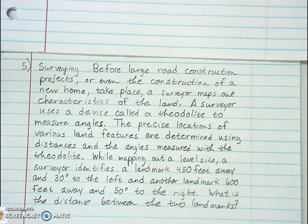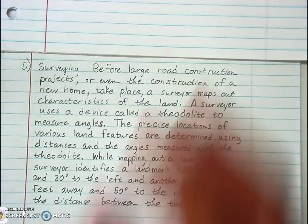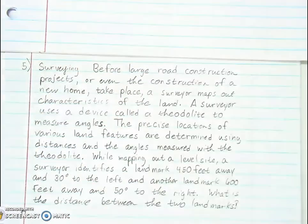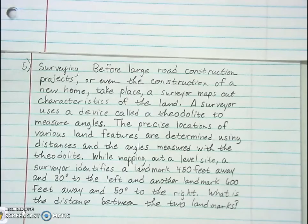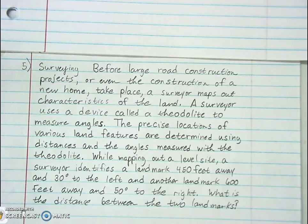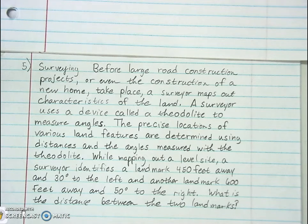The question is: what is the distance between the two landmarks? To find distance, you're going to use a distance formula. Before, when you had two ordered pairs on a rectangular plane, you used the rectangular distance formula. But when it comes to polar coordinates and polar graphing, there is also a distance formula for that.